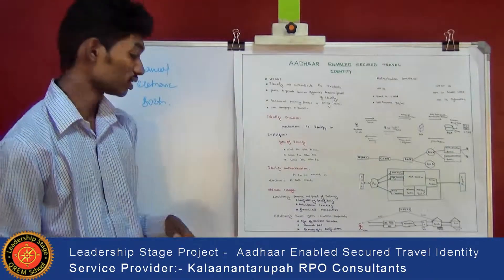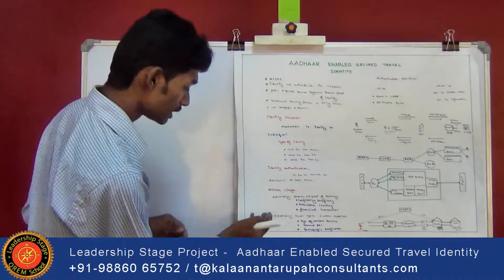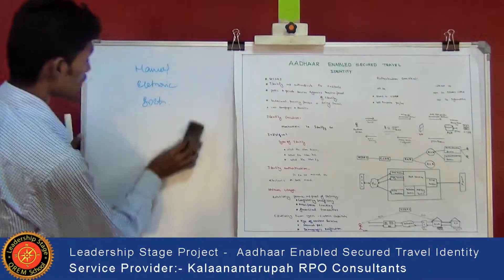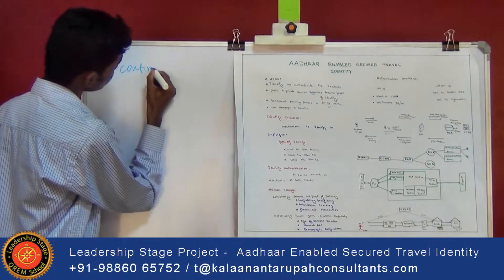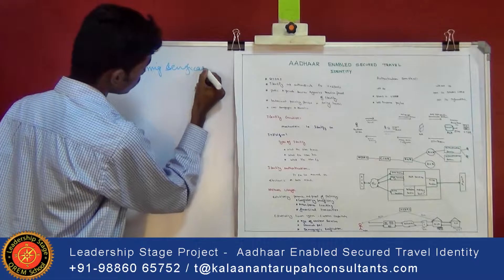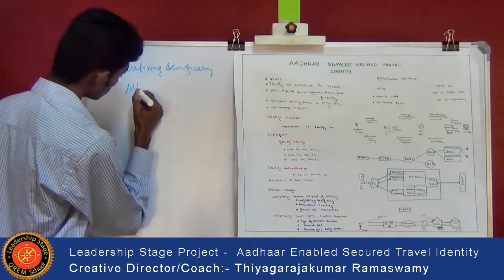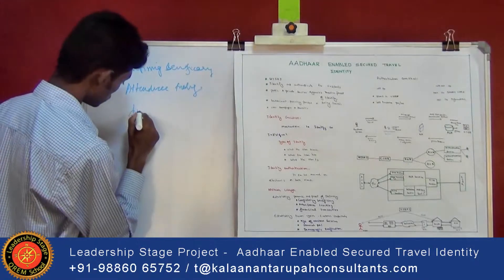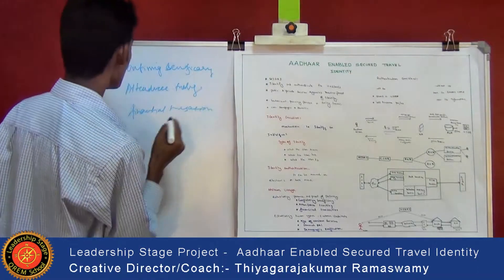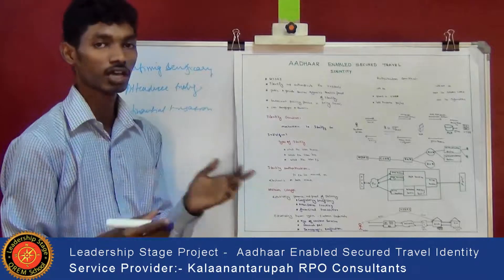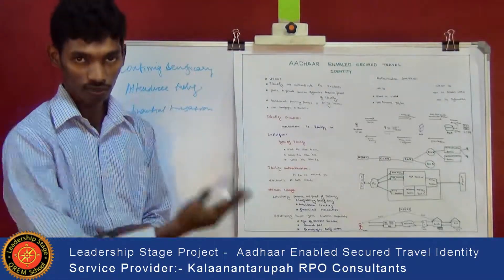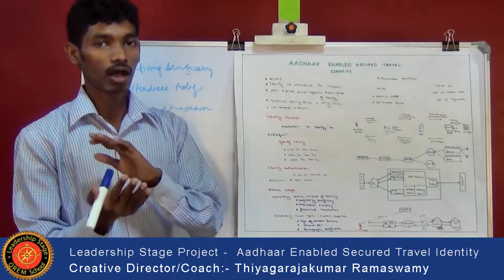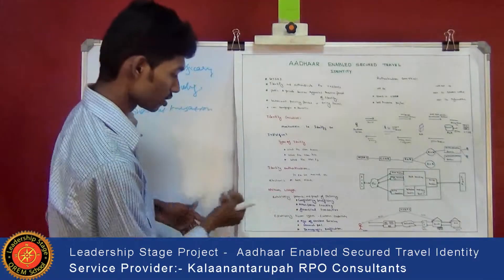The main Aadhaar usages are establishing a presence and proof of delivery, and establishing know-your-customer credentials. In establishing presence and proof of delivery, the three types are confirming the beneficiary, attendance tracking, and financial transaction. Confirming the beneficiary means if the user has already received a service from the service provider, that entry is recorded so the user cannot request the same service again. This is why confirming the beneficiary is needed in the Aadhaar application.